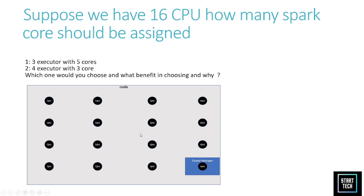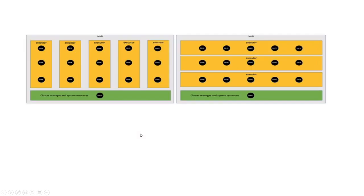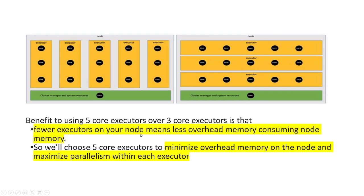We will leave one CPU for the cluster manager, so we are left with 15 CPUs. Which option should we select? As you can see on the left we have five executors with three cores, and on the right we have three executors with five cores. I encourage you to pause the video and check out the answer.